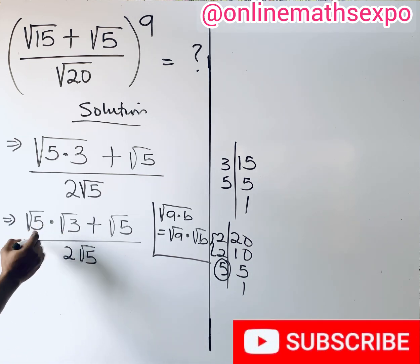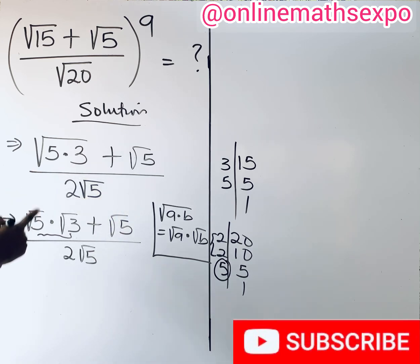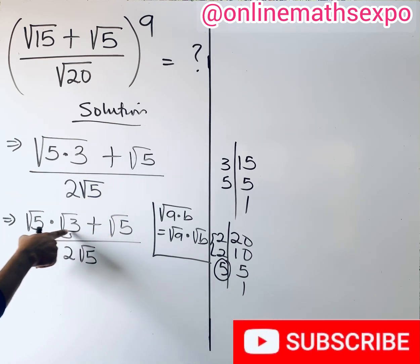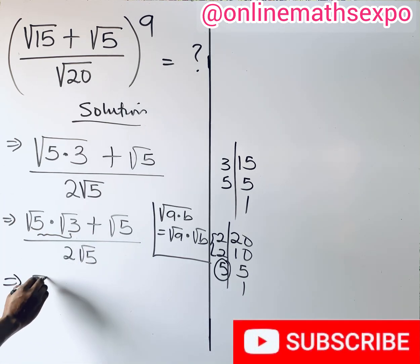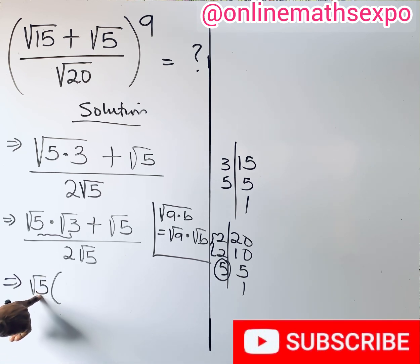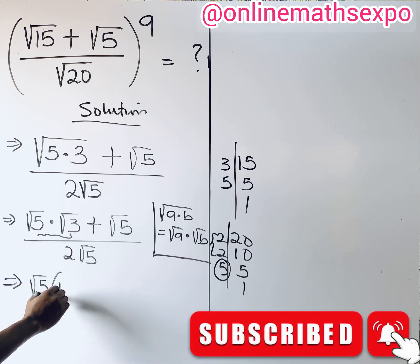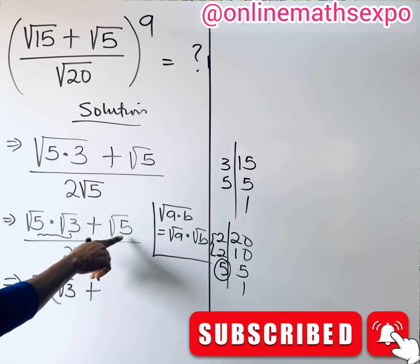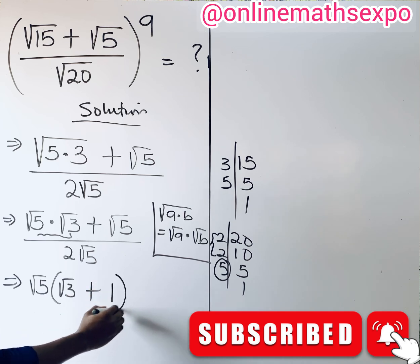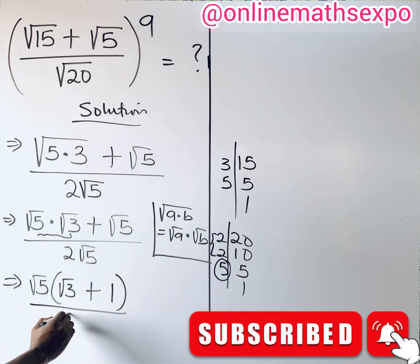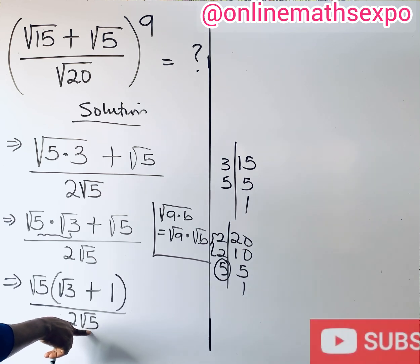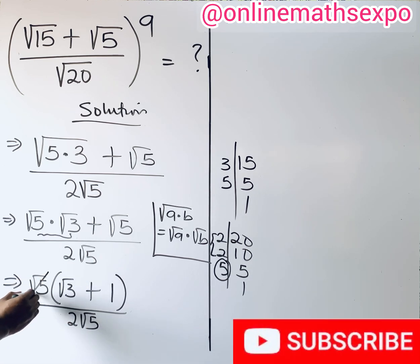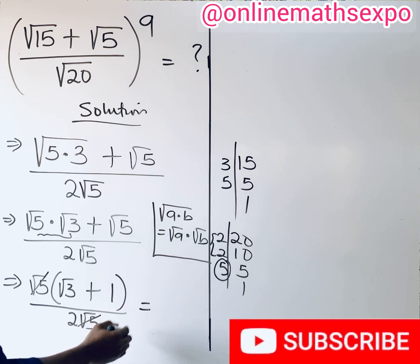Observe that √5 is repeated on both sides of the numerator. Because of that, we factor √5 out. Opening a bracket, when you divide both terms by √5 you are left with √3 plus 1 (since √5 ÷ √5 = 1). The whole expression is divided by 2√5. The √5 in the numerator and denominator cancel, leaving (√3 + 1) / 2.